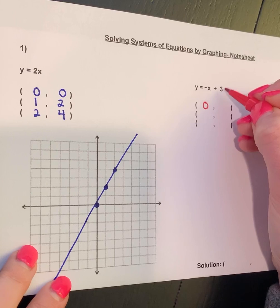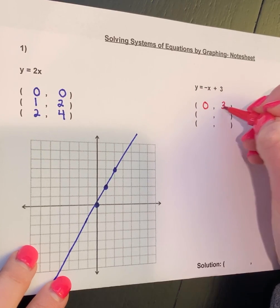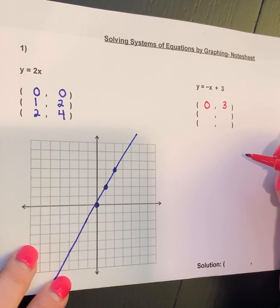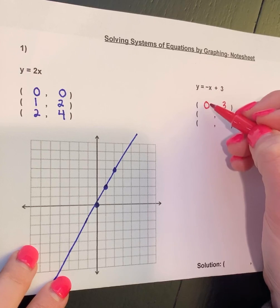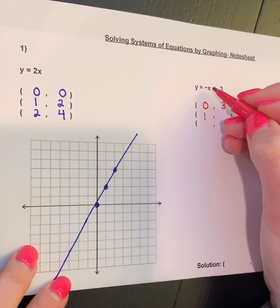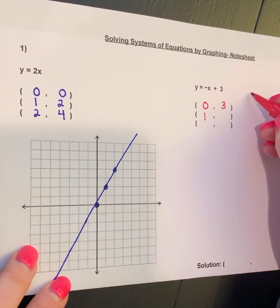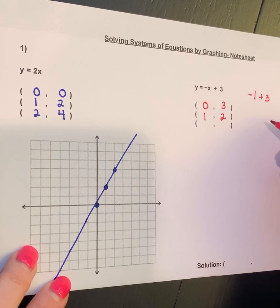Then let's put 1 in. If I put 1 in, I get -1 because there's a negative out in front, plus 3, so y ends up being 2.